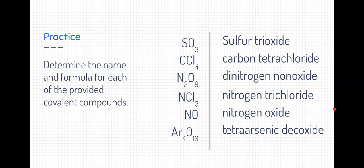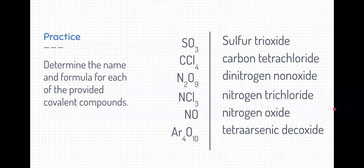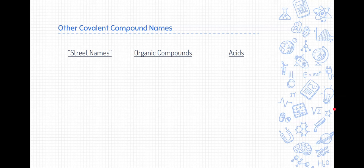Naming and writing the covalent compound formulas are generally pretty easy if you know the prefix. Now, I said covalent compounds are generally pretty easy, but that's mostly for those binary, simple, non-metal elements. There are a bunch of covalent compounds that are specialized. Let's start with ones that I dubbed the ones with street names.